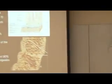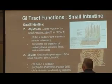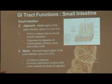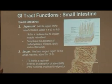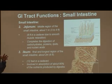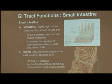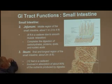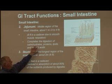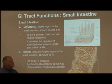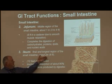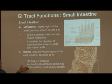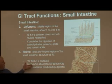The jejunum is the middle portion of the small intestine, about three to four feet long in living persons, but can be up to eight feet in cadavers because the smooth muscle is no longer contracting. The jejunum is responsible for completing the process of digestion of our major biological molecules — carbohydrates, proteins, lipids, and nucleic acids. The ileum is the longest region of the small intestine, about two meters or six feet in a living person, and can double to about twelve feet in a cadaver.